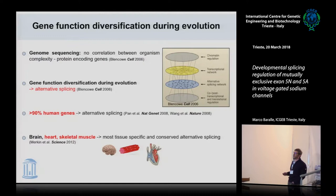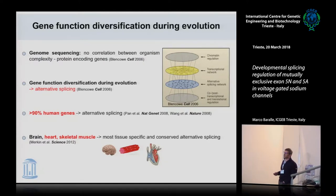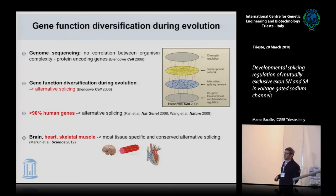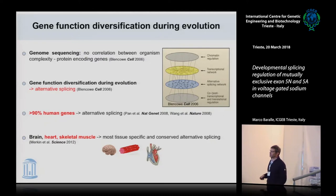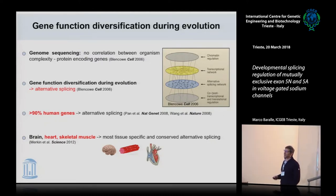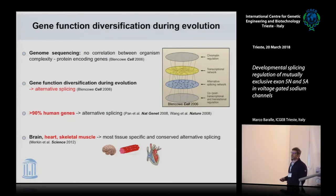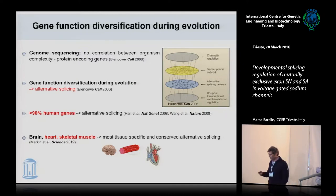I just want to highlight that alternative splicing is the norm — around 90% of human genes undergo this type of processing. I also want to highlight the fact that the most tissue-specific and conserved alternative splicings are in the heart, and also in the brain and skeletal muscle.